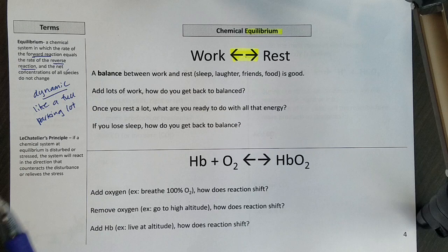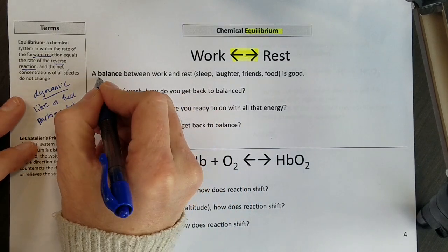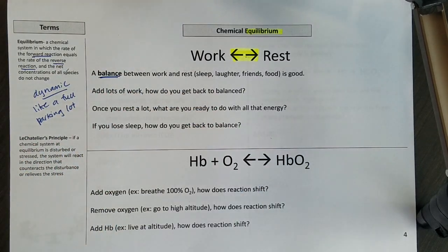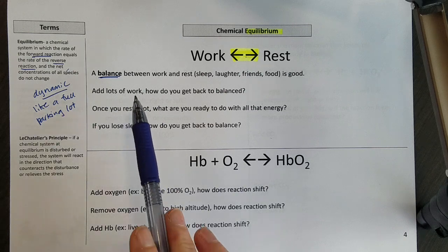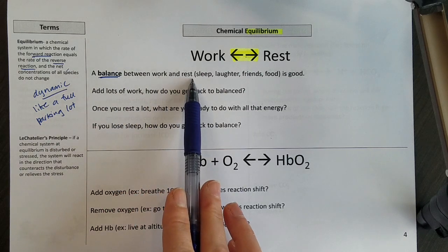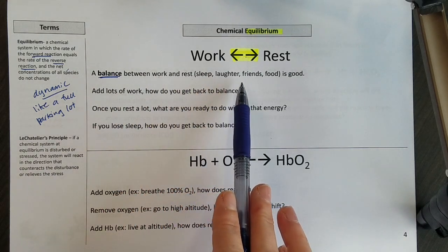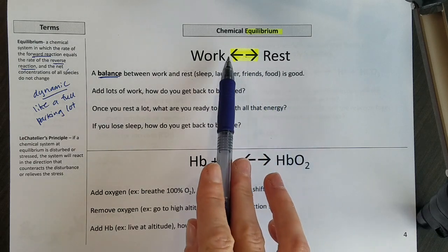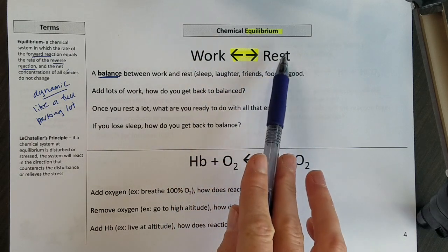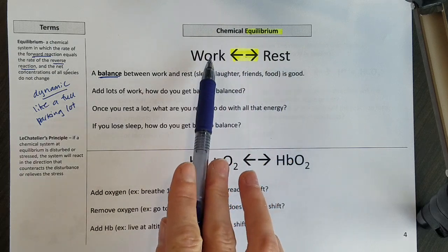So at equilibrium, another way that we could say we're at equilibrium is we have some kind of balance. I'm going to use an analogy here that at least makes sense to my life. My life is a balance between work and rest. Rest might be sleep or laughing or friends or food. I can only work so much, and then I need to go rest, and then I rest and I'm ready to go work.